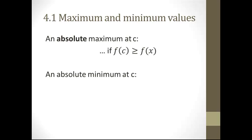An absolute minimum is going to be exactly the opposite. It's going to be the point where x equals c where y, or f(c), is going to be less than or equal to all the other y's, all the other f(x)'s. To put it in ordinary language: if you were to graph an equation, an absolute maximum is the highest y point of that graph, and the absolute minimum is the lowest y on that graph. That's what absolute means.